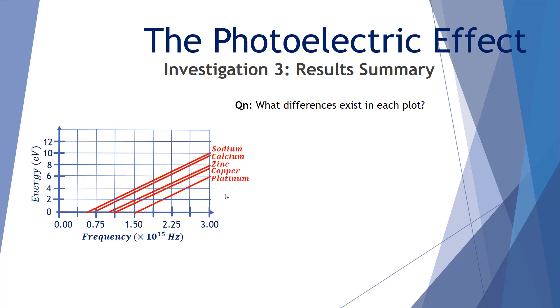What differences exist in each plot? I imagine most people see clearly that the x-intercepts are very different for each one of these five plots. Let's have a look at the conclusion we can find from this investigation.